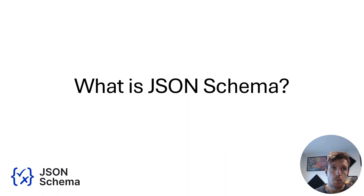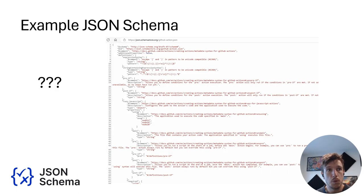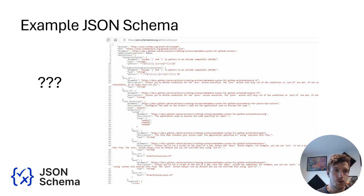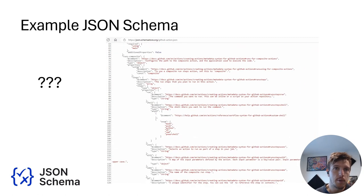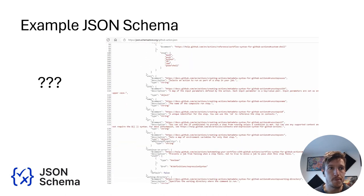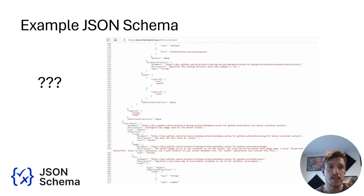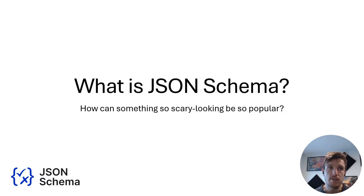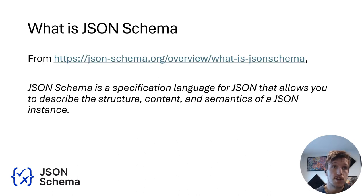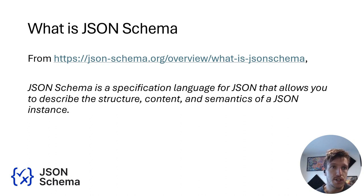Part 2: what is JSON Schema? Let's just jump straight into it. This is JSON Schema. In the example here, we have a modest 700 lines to determine the appropriate configuration syntax of any GitHub Actions workflow. This looks hideous. Rewriting the previous slide — what is JSON Schema, and how something so scary can be so popular. JSON Schema is a specification language for JSON that allows you to describe the structure, content, and semantics of a JSON instance. JSON Schema, in fact, has its own JSON Schema.